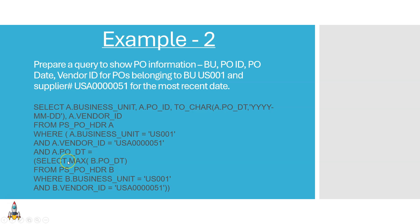When you see one or more SELECT statements inside a parent SELECT statement, that is an example of subquery. The database engine first executes the inner SQL — the subquery — and gets the most recent date, say 3rd of February. It then passes that value to the outer PO date condition and executes the complete SQL. The best part is, if somebody creates a PO after two days on 5th of February, we don't need to worry — the inner SQL will pass 5th of February automatically, and we will always get the correct result.